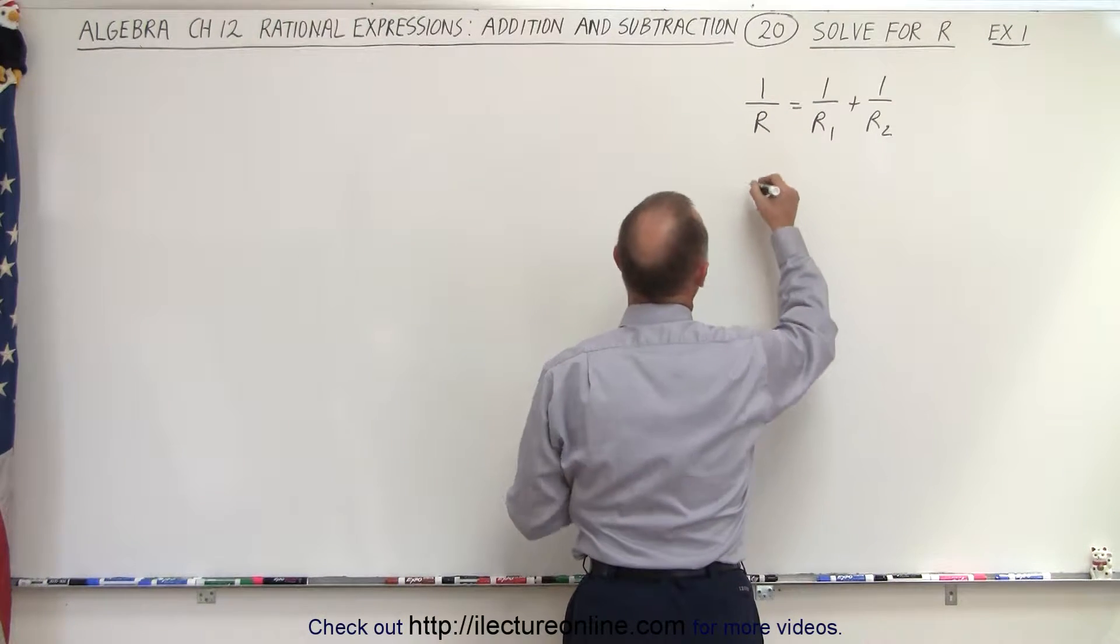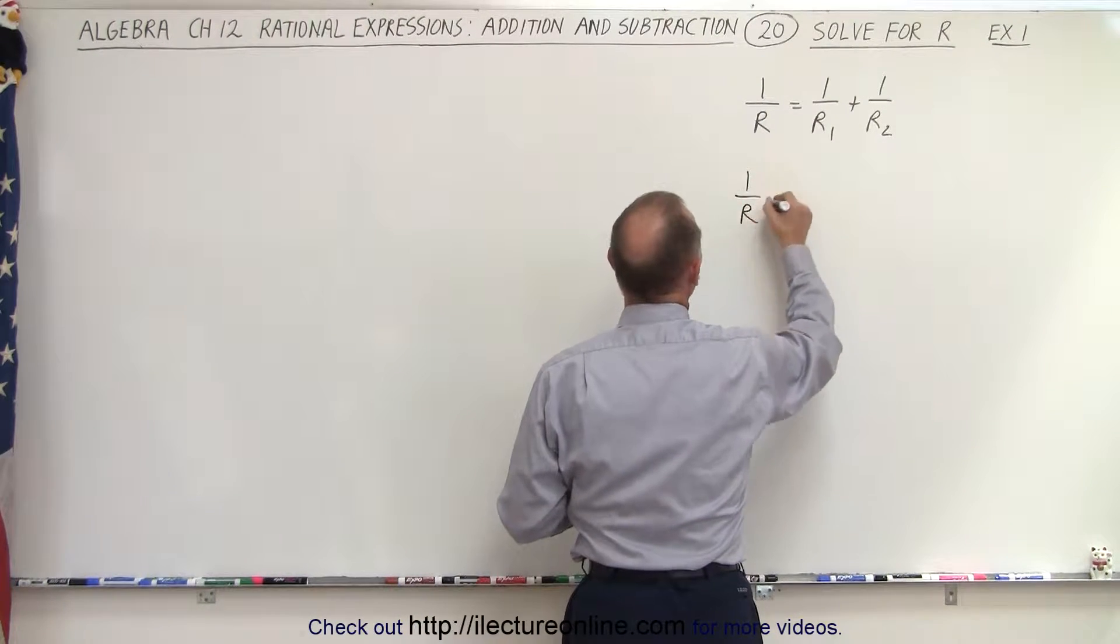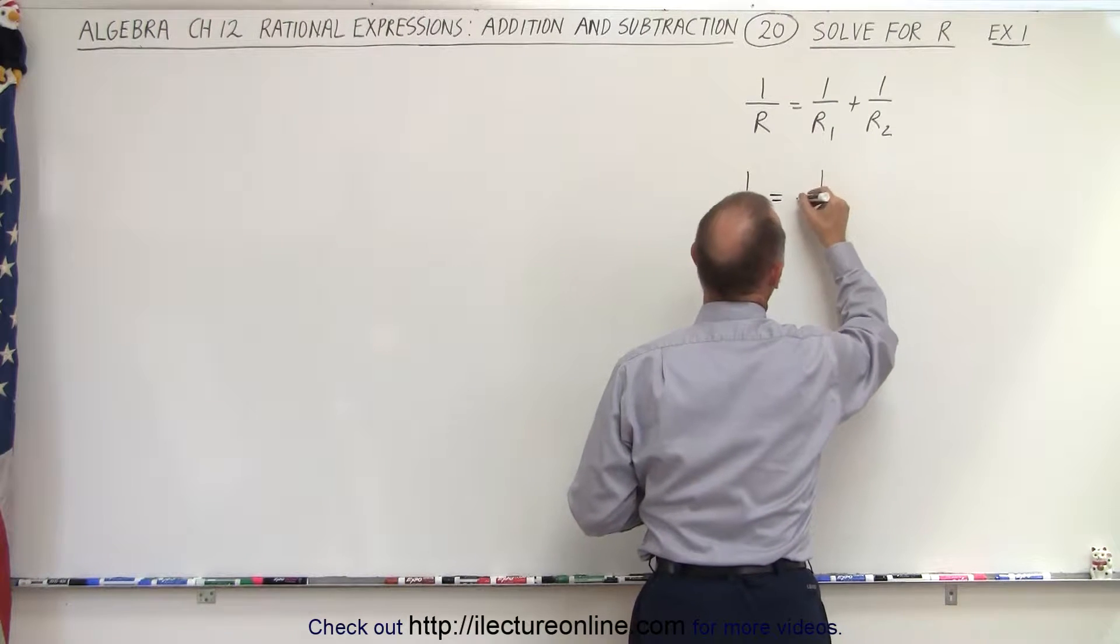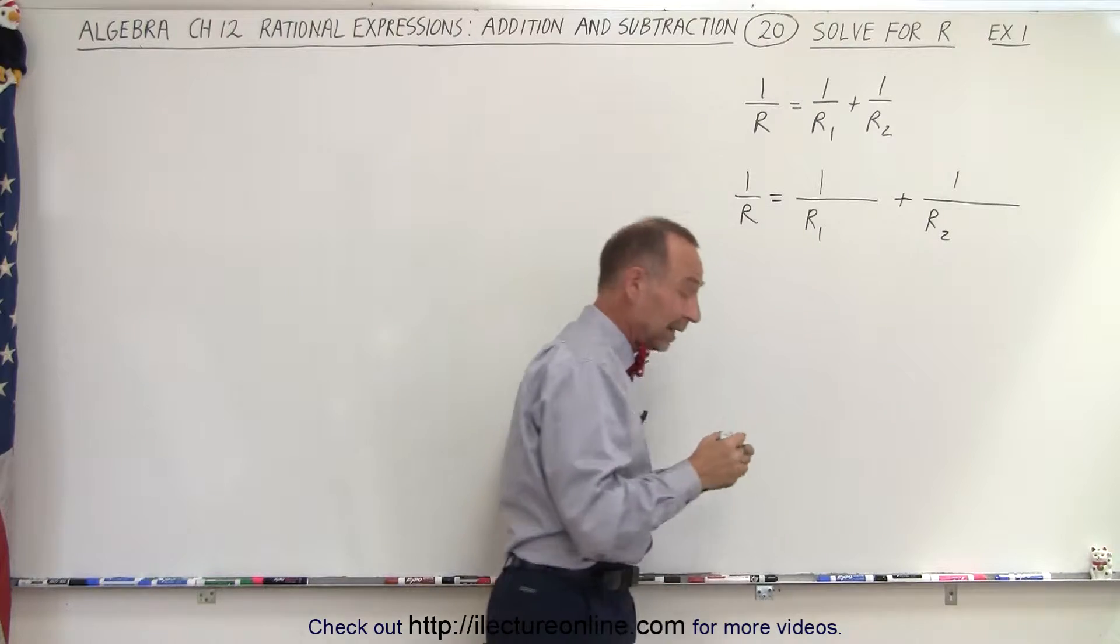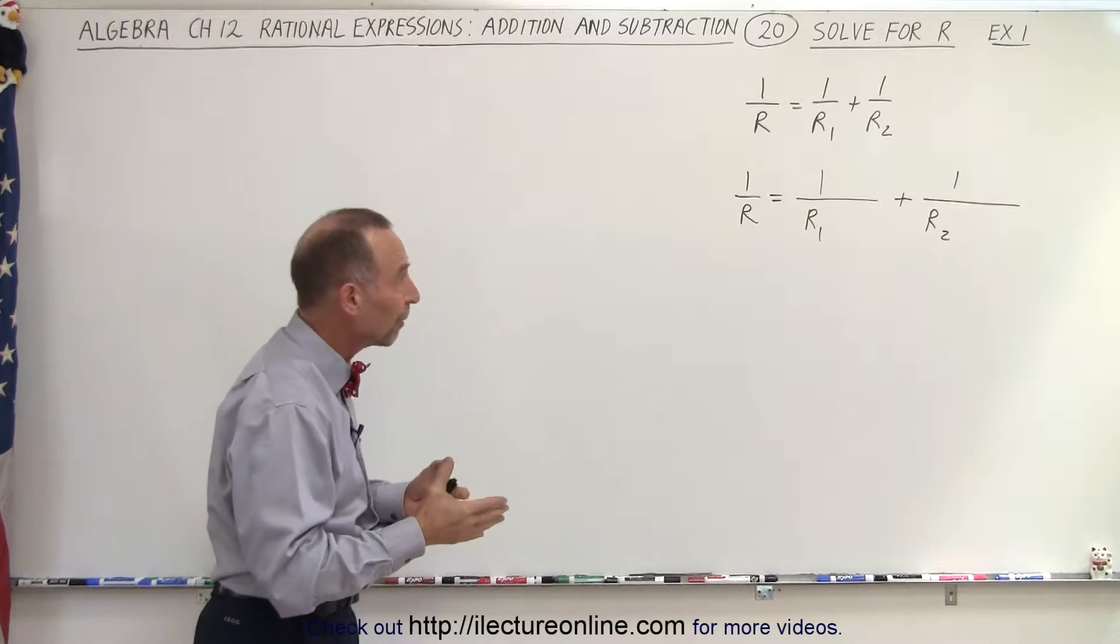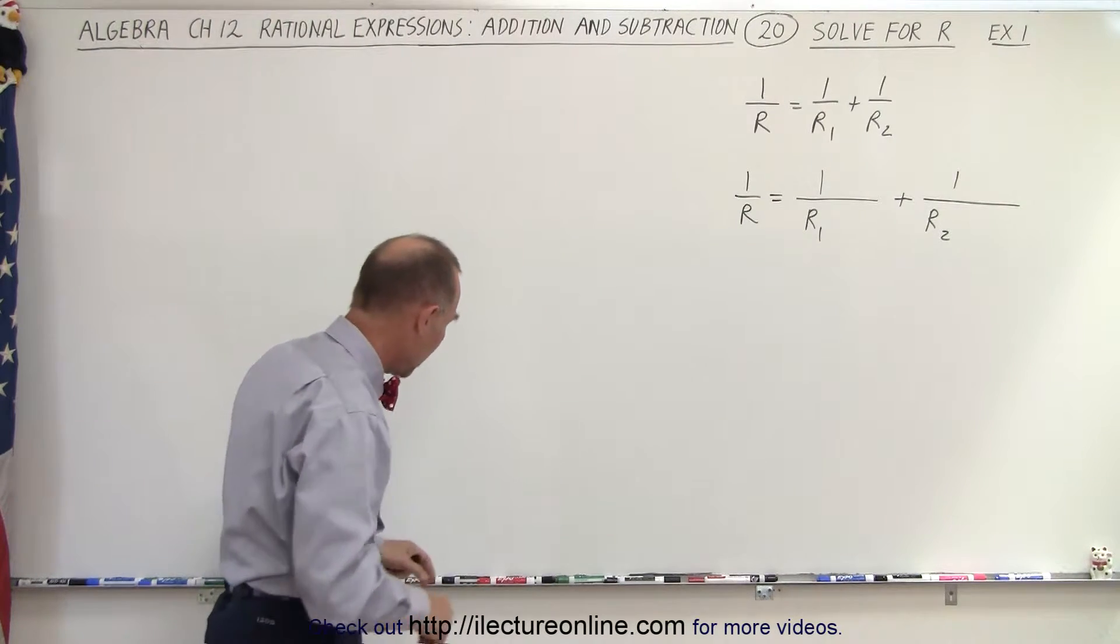So what we can say here is that 1 over r is equal to, and we're going to leave ourselves a little bit more room, so we can multiply both denominators by the proper factor to make them common.